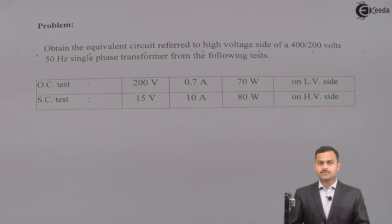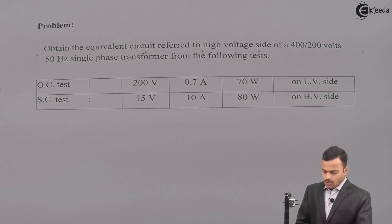Hi friends, in this video, we are going to see a problem based on open circuit and short circuit test. What we are going to do? Open circuit, short circuit test results are there. From that, we are going to obtain equivalent circuit of a transformer. See the statement of the problem. Obtain the equivalent circuit referred to high voltage side of a 400/200 volts, 50 hertz single phase transformer from the following test.